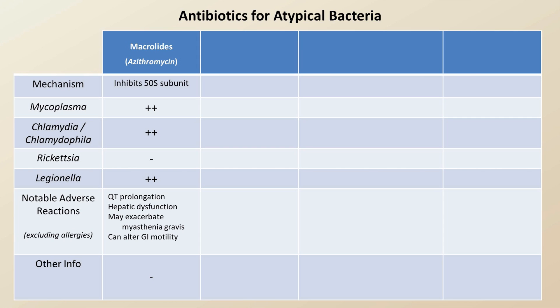Notable adverse reactions to azithromycin include QT prolongation, hepatic dysfunction, the possibility of exacerbating myasthenia gravis, and some macrolides — most prominently erythromycin — can alter GI motility.